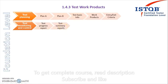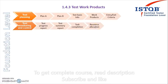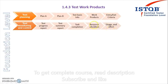The summary report is also part of test monitoring and control. Next is test completion — checking whether all the tests are completing. Then resource allocation: if one resource is not available, provide two resources, or if resources are more than needed, reduce and reallocate them. Usage and effort feedback is given back to the test planning phase so the plan can be updated.